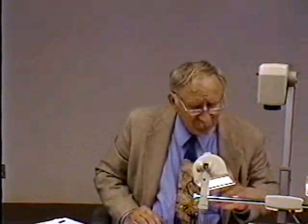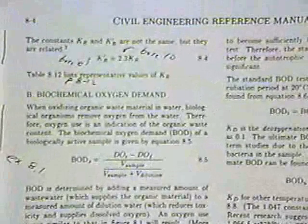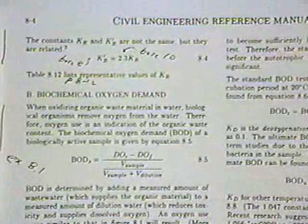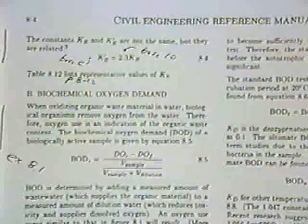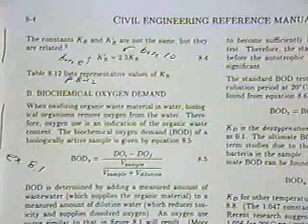Going on to the next page, he gives two equations — one log base 10, the other log base E — and shows how to convert from log base 10 to log base E. Then the biochemical oxygen demand is equation 8.5.